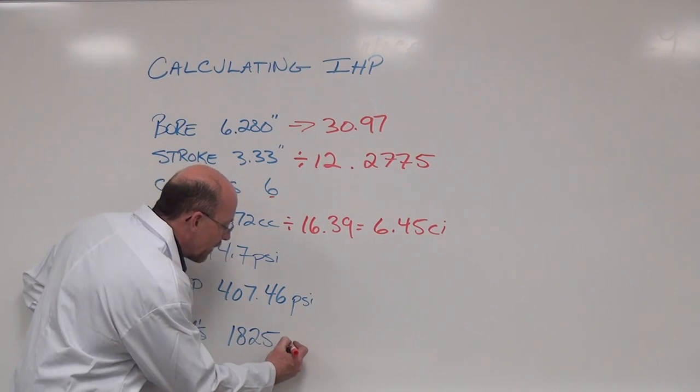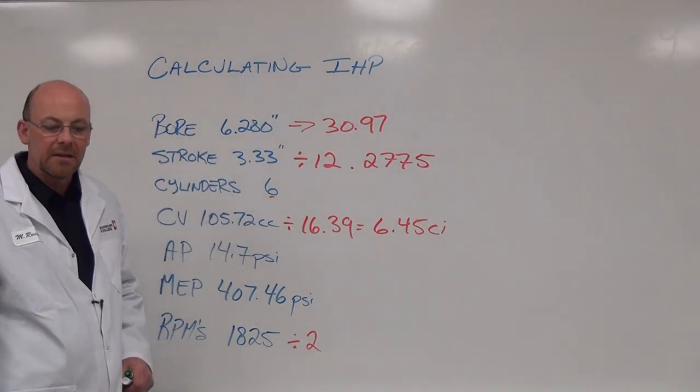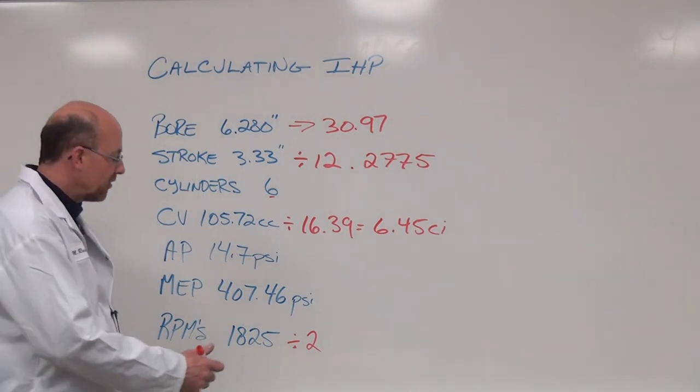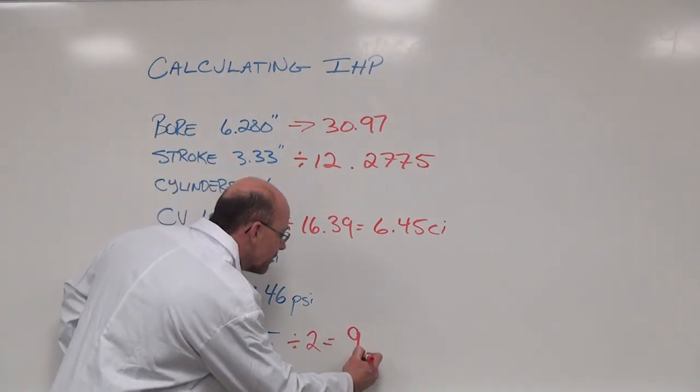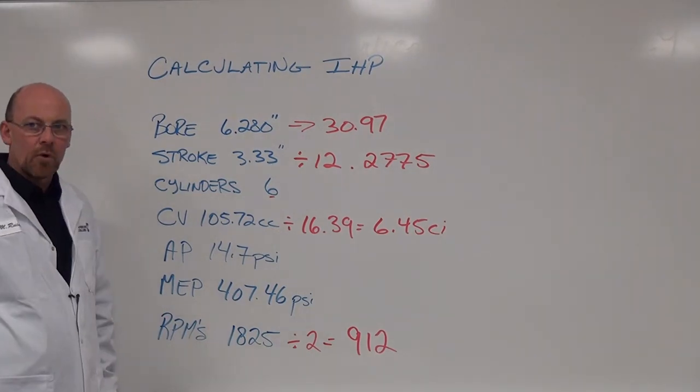We take that number here and we divide it by 2 because the cam is running at half the speed, and that gives us a value of 912 power strokes in this particular formula.